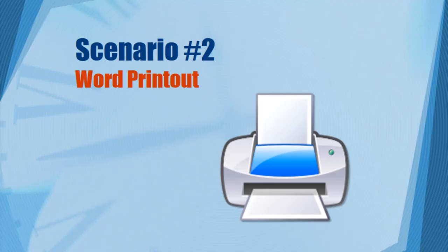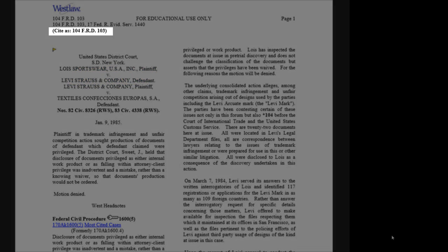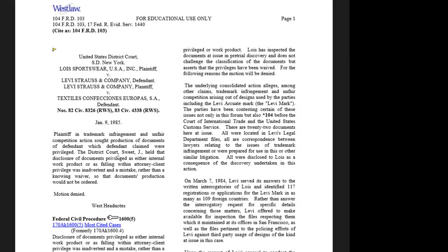Let's talk now about scenario number two: suppose we're looking at a Word printout. This time we'll use the Lois Sportswear case instead of Galt. The numerical part of your citation is at the top of the page — 104 FRD 103. You know from looking at that citation that the first page of this case is 103. Don't be confused by the number you see at the top right; this is simply the page number for the printout. Beyond the first page, we see that we're turning — at least in the hard copy reporter — from page 103 to page 104.